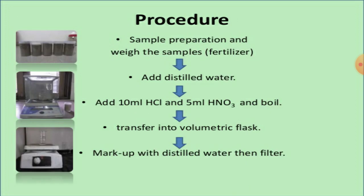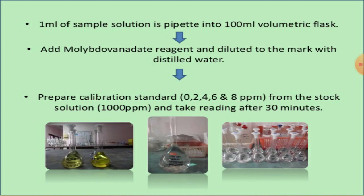For the sample preparation procedure: weigh the fertilizer sample, add distilled water, then add 10 ml of hydrochloric acid and 5 ml of nitric acid, and boil the solution. After boiling, transfer into a volumetric flask, mark up with distilled water, and filter. Pipette 1 ml of the sample solution into a 100 ml volumetric flask, add the molybdovanidate reagent, and dilute to the mark with distilled water.